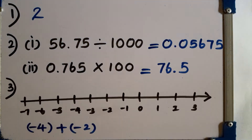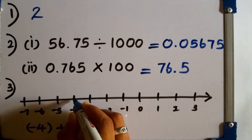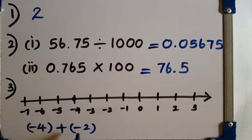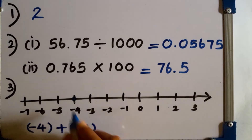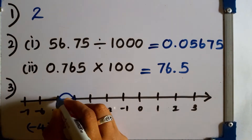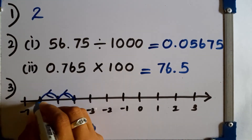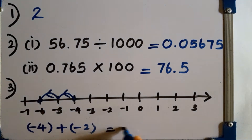Third question. Find the value of minus 4 plus minus 2 using the number line. First, we will mark minus 4. Then add minus 2. We have to move 2 units to the left direction. The answer will be minus 6.